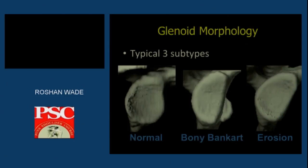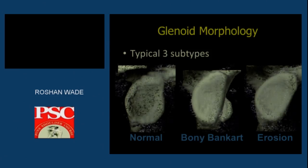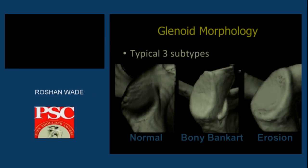We are looking at glenoid morphology which can be normal, abnormal, or a bony Bankart lesion, or it could be erosive. In such situations it is very difficult to address the issue because bony instability around the shoulder joint is difficult to address. If you have bony instability associated with loss of anterior glenoid rim, you are going to have recurrent instability around the shoulder joint.